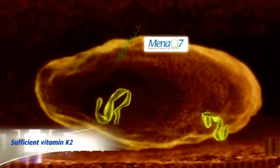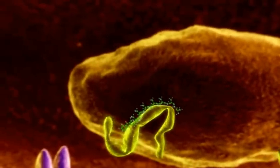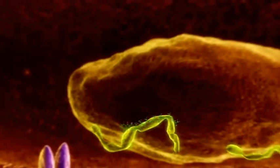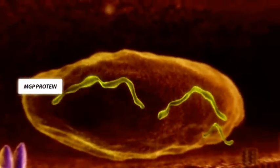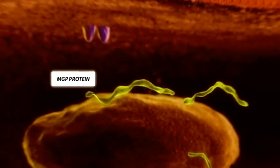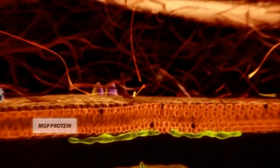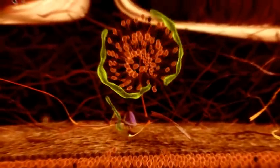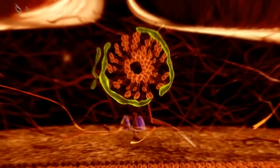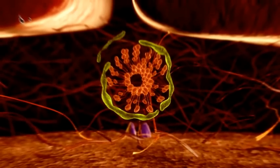When arriving in the arterial vessel wall, MenaQ7 crosses the cell membrane of the vascular smooth muscle cells. Vitamin K2 acts in the cell as an activator of matrix GLA protein. MGP undergoes a conformation change due to MenaQ7 and becomes active. The active conformation can bind to negatively charged phospholipids in the cell membrane.